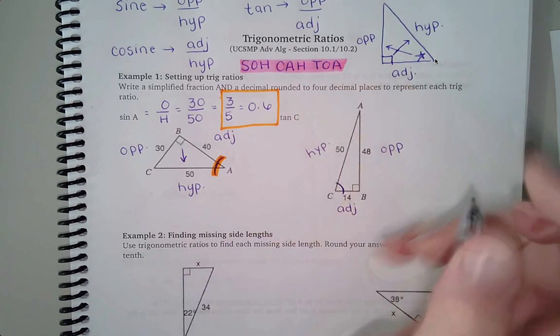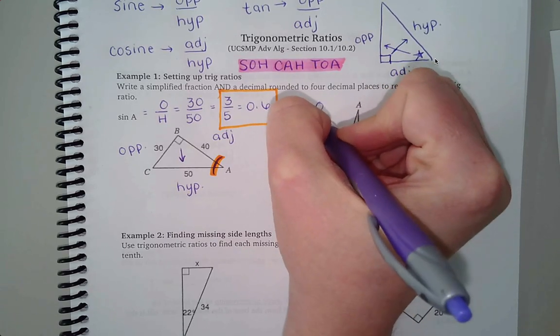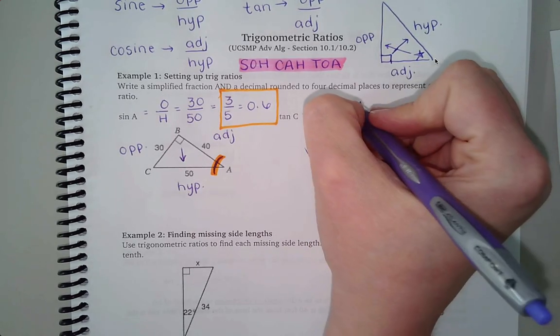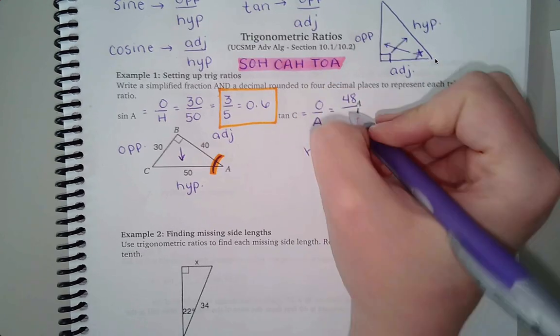Tangent from SOHCAHTOA is opposite over adjacent. So that would be opposite is 48, adjacent is 14.